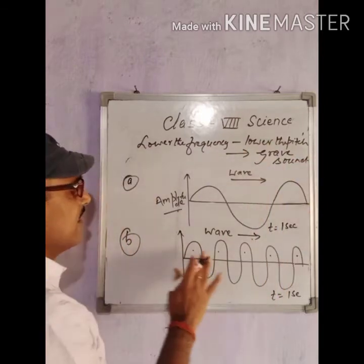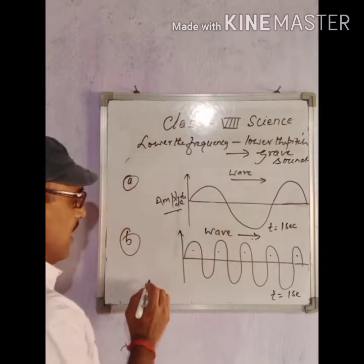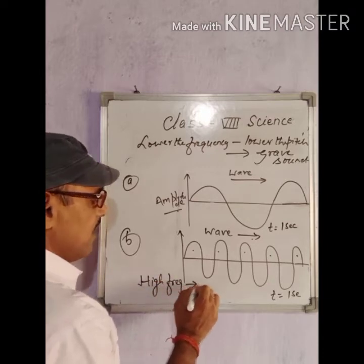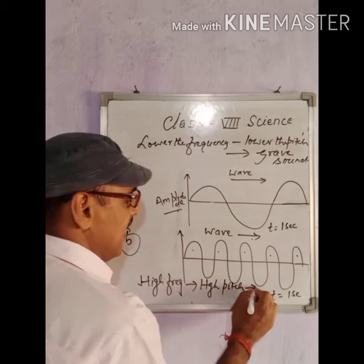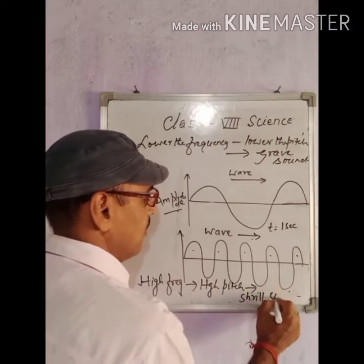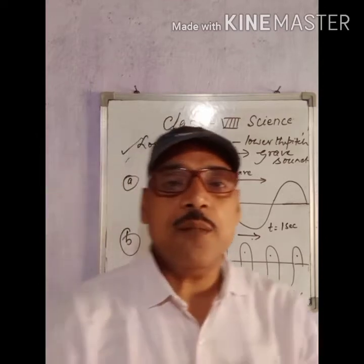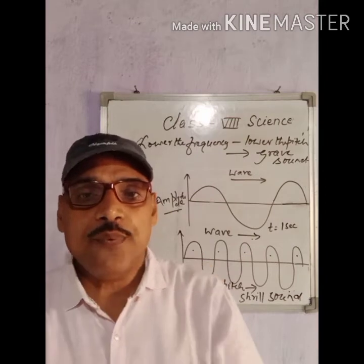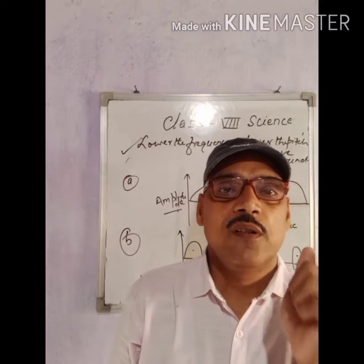And in diagram B, higher the frequency means high pitch, and shrill is the sound. So to summarize: lower the frequency, lower is the pitch, grave is the sound; higher the frequency, higher the pitch, shrill is the sound.